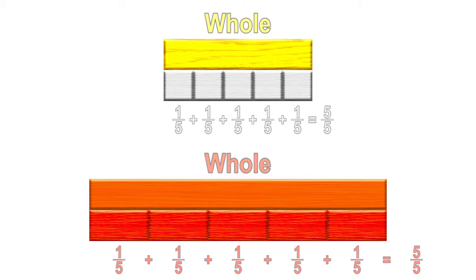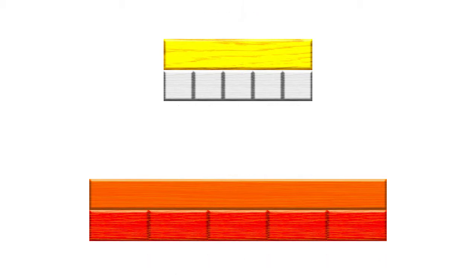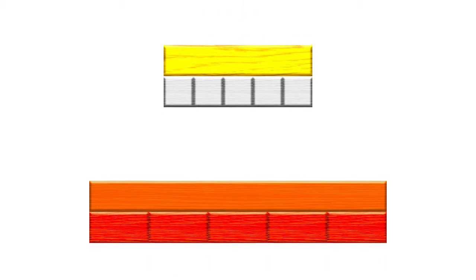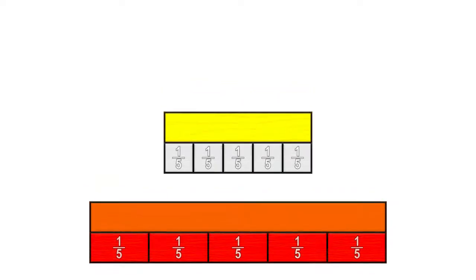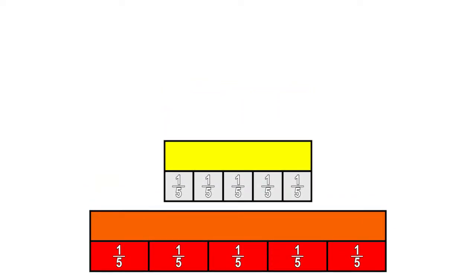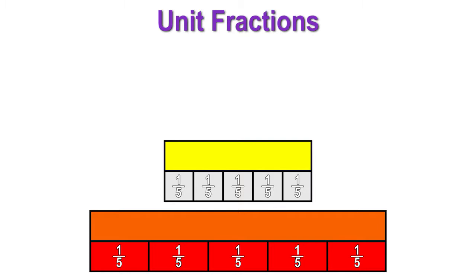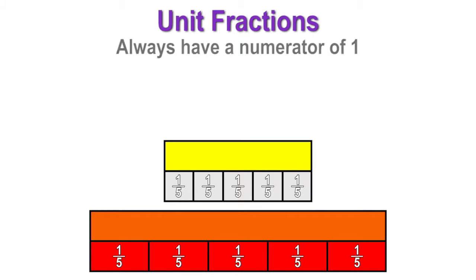If we were to create a model of five-fifths from each example, it might look like this. Notice each part of the model is labeled with its unit fraction, in this case one-fifth. Remember, when working with unit fractions, the numerator is always one, since we are representing one unit of the fraction.